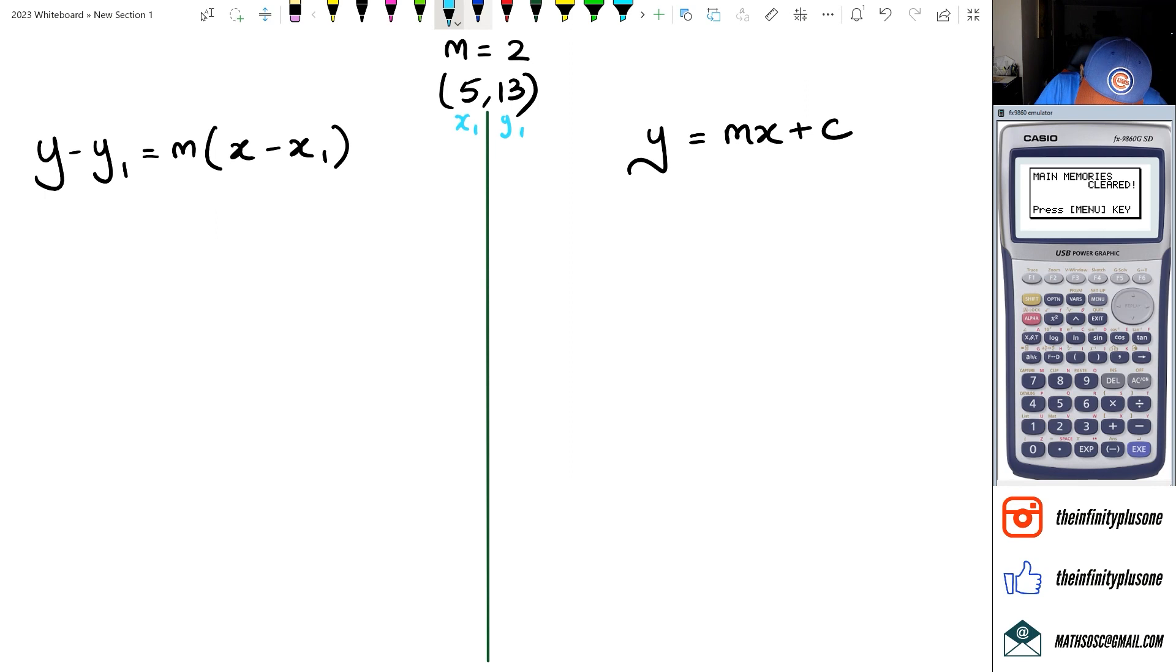Basically then I'm going to get y minus y1, which happens to be 13, equals m, which happens to be 2, and then we've got x minus x1, which happens to be 5.